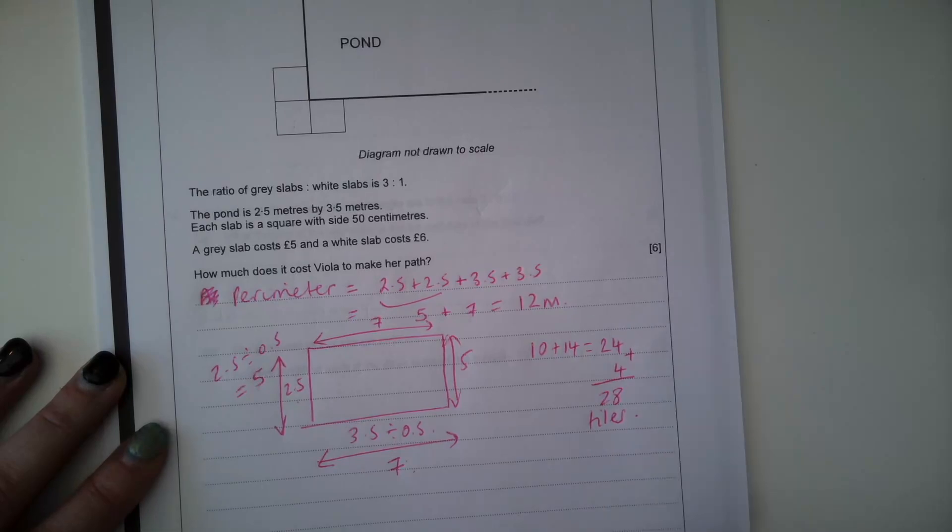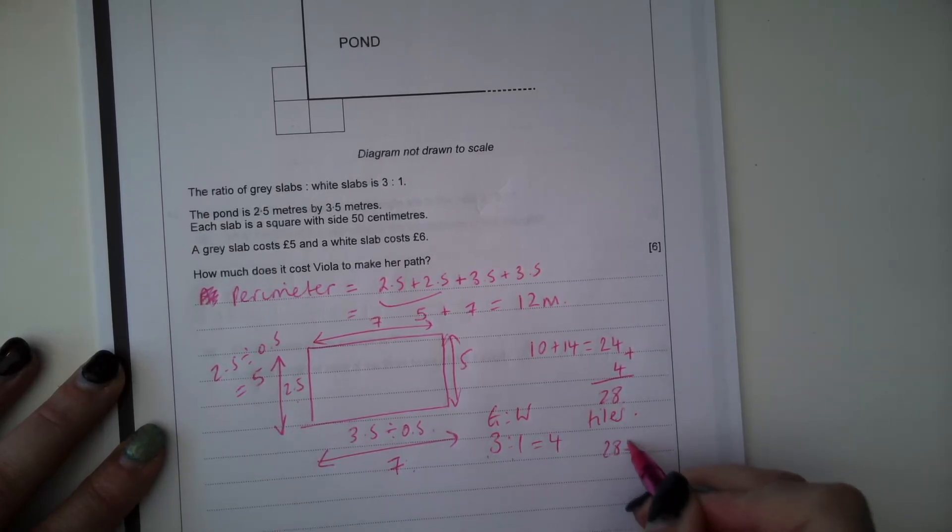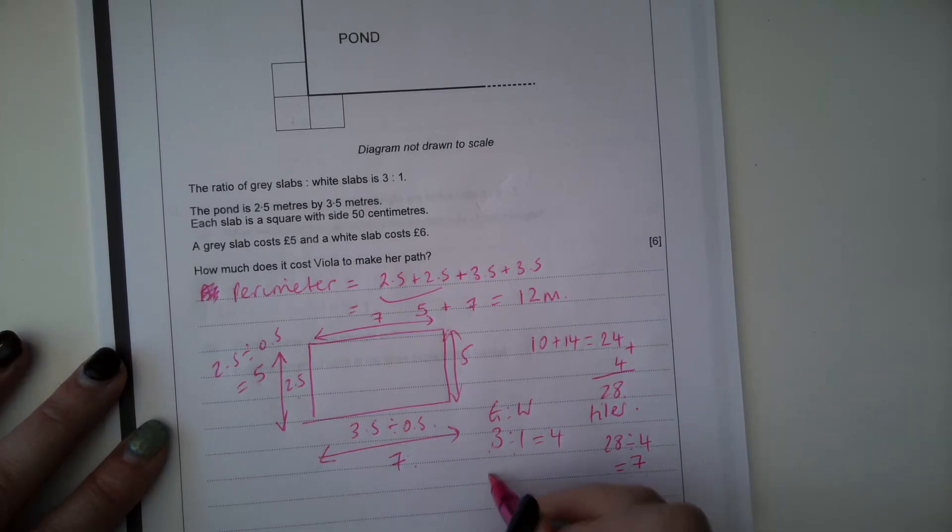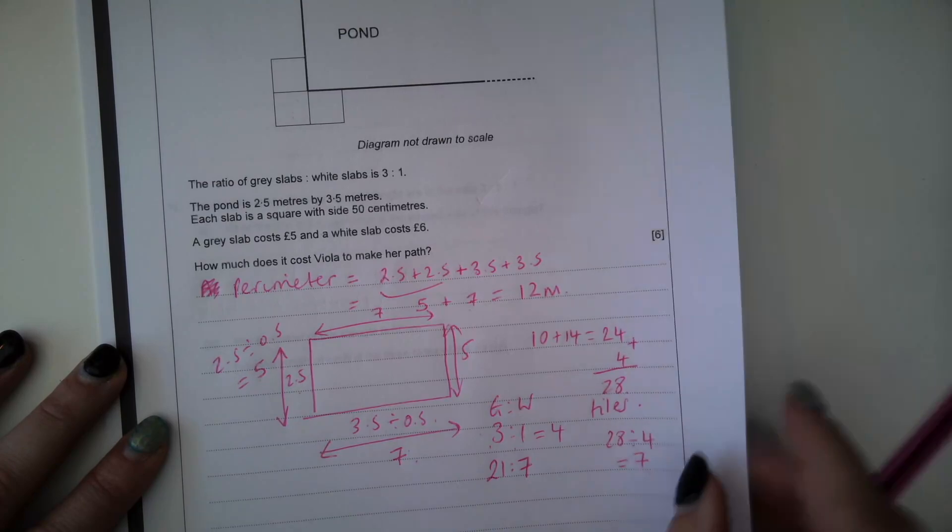Now the ratio of grey to white is 3 to 1, and we've got 28. So 3 plus 1 is 4, 28 divided by 4 is 7. We're sharing the number of tiles into this ratio to find out how many grey and how many white. So 3 times 7 is 21, 1 times 7 is 7. So there are 21 grey tiles, 7 white tiles.